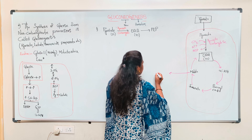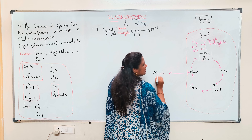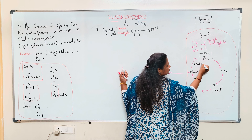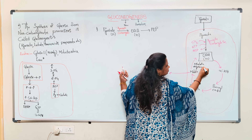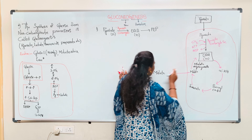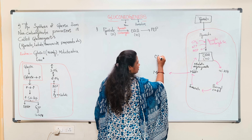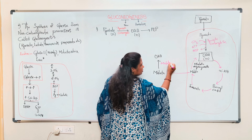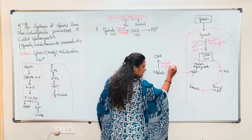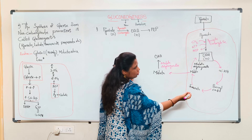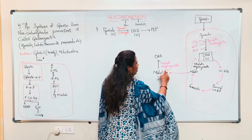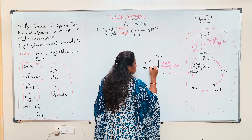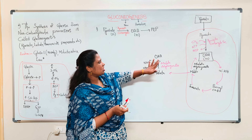To solve this, oxaloacetate undergoes part of the Krebs cycle, giving alpha-ketoglutarate, succinyl CoA, fumarate, and then malate. Malate can come out to the cytosol since malate is permeable to the cell membrane. The enzyme malate dehydrogenase converts malate back to oxaloacetate in the cytosol. This enzyme is present in both the mitochondria and the cytosol. So finally, oxaloacetate is available in the cytosol.